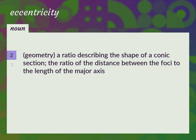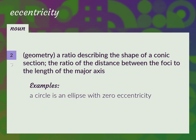Geometry: a ratio describing the shape of a conic section. The ratio of the distance between the foci to the length of the major axis. A circle is an ellipse with zero eccentricity.